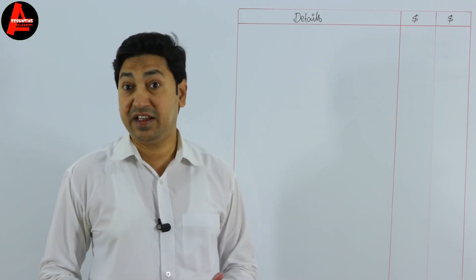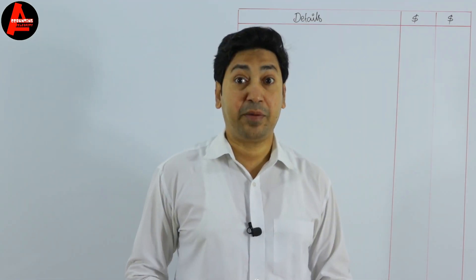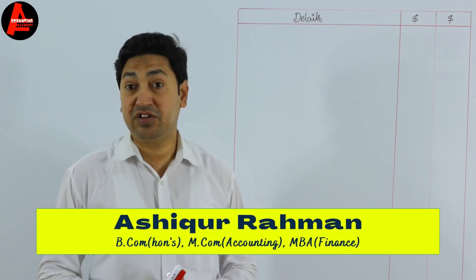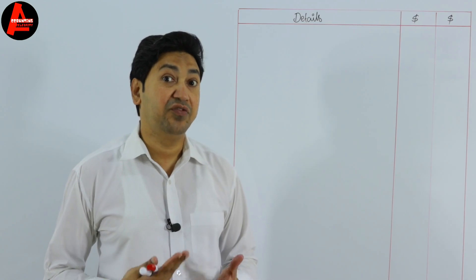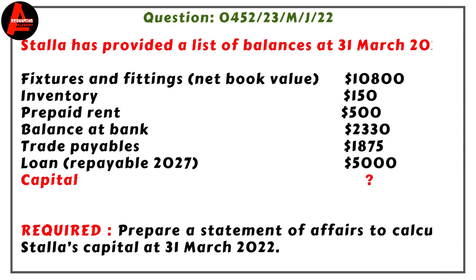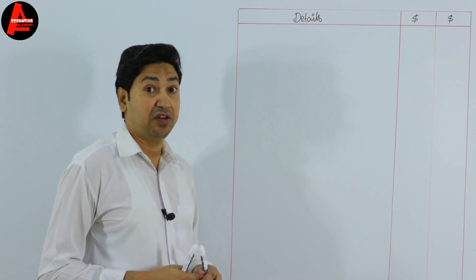A statement of affairs is just like a statement of financial position, meaning a balance sheet. Here we will calculate the capital amount since capital is not given, so this question will be a bit complicated for many students. We will see how to answer this question and figure out the capital. Stella has provided a list of balances at 31st March 2022, and capital is shown as a question mark. We need to prepare the statement of affairs to calculate Stella's capital at 31st March 2022, using all the assets and liabilities given.